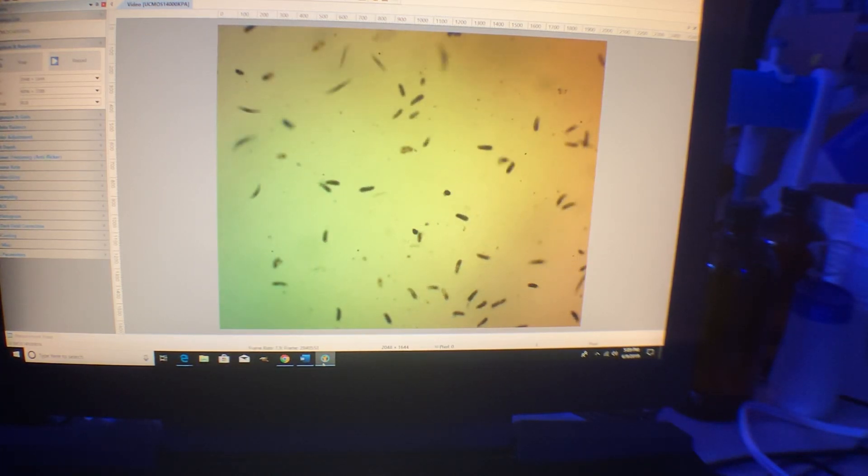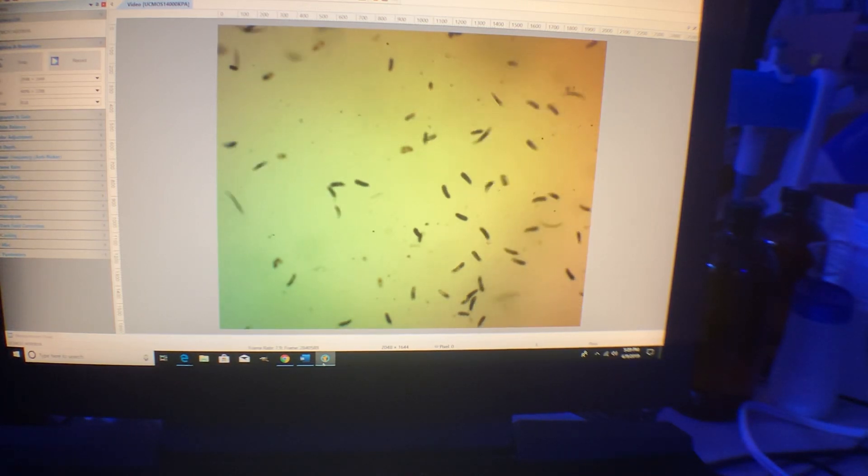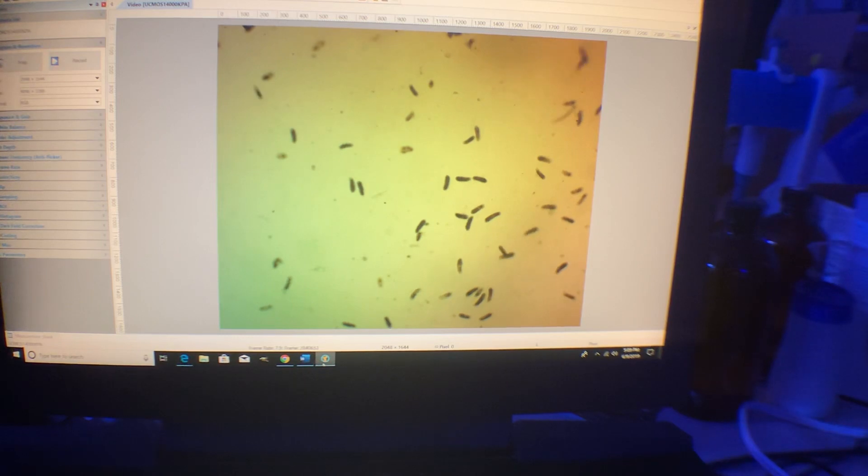But if you take your RTN-ing coral, whether it's a zoanthid, a mushroom, a euphyllia, cataphyllia, anemone, montipora, acropora, it doesn't matter. Whatever coral is dying in your system, it is loaded with these phylasters.